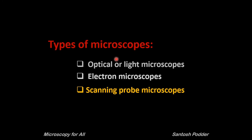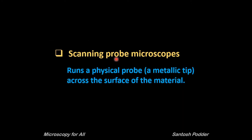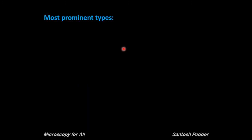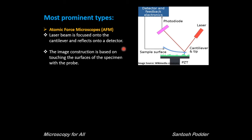Now we move to the third type: scanning probe microscopes. In scanning probe microscopes, a physical probe is run across the surface of the material — it is something like a blind person feeling their way around an object. The very sharp apex of the probe determines the higher resolution in these systems. In atomic force microscopy (AFM), a laser beam is focused onto a cantilever and reflects into a detector. The deflection of the cantilever is recorded by the computer, and an image is constructed based on the probe touching the surface of the specimen.